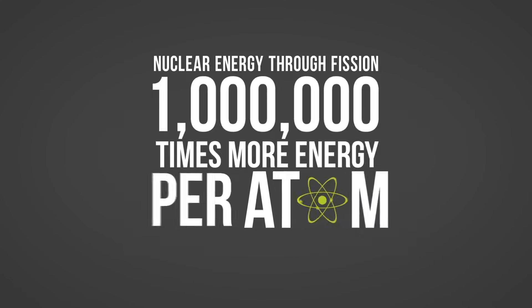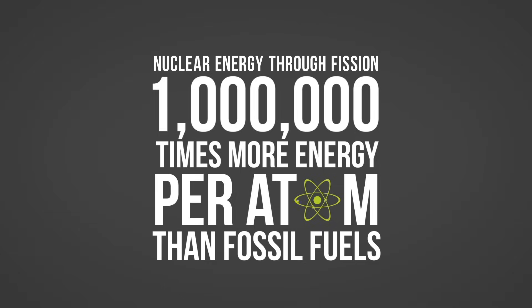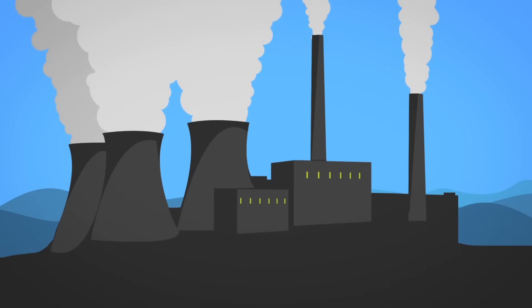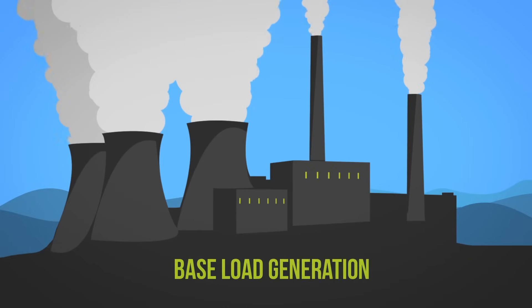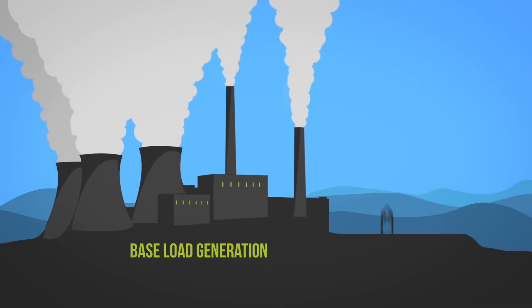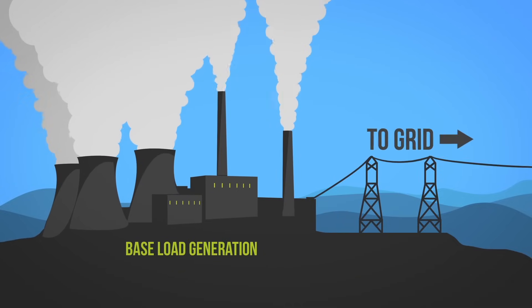Nuclear energy, through fission, can release 1 million times more energy per atom than fossil fuels. Nuclear plants have large power generating capacity and low operating costs, making it ideal for base load generation. Because of its large scale and centralized nature, it can easily be integrated into electricity grids, requiring few changes to existing infrastructure.